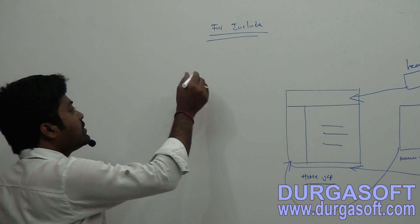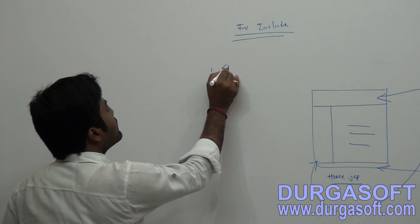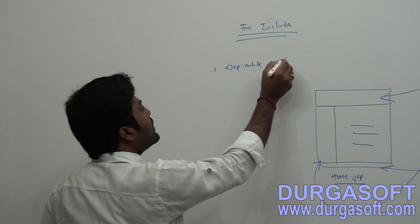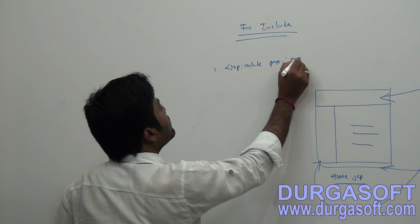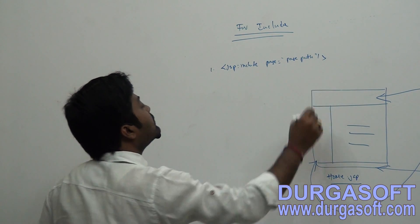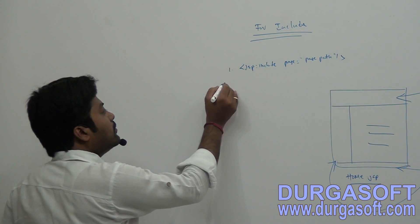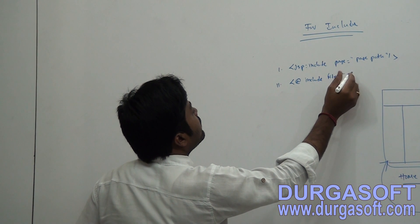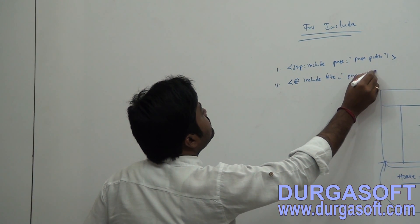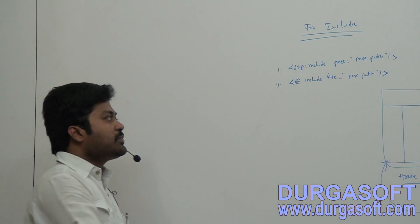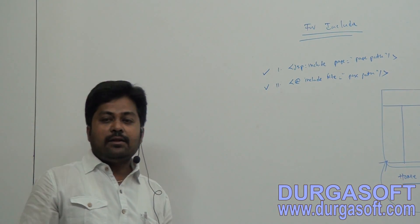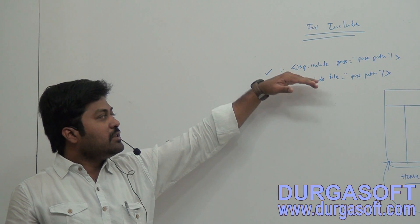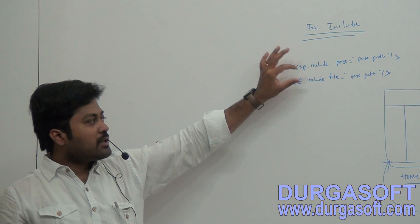For doing this include mechanism, there are two mechanisms. One is by using jsp:include page, where you can pass your required page name or page path. There is also another mechanism: you can use the @include file directive and pass your page path. What is the difference between these two, and which one is better to use?